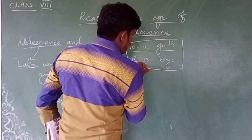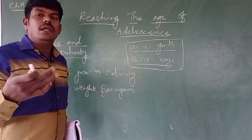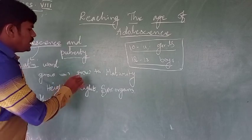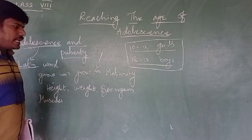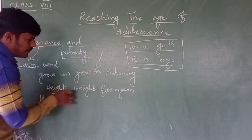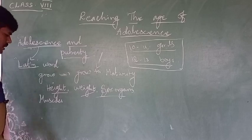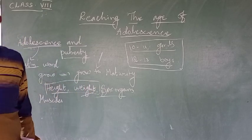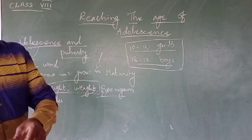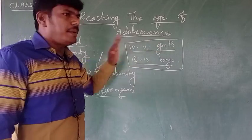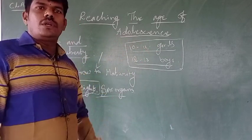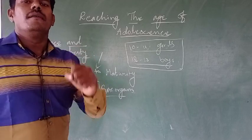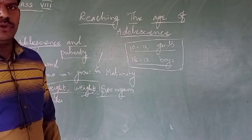Once puberty is reached, the person becomes eligible to produce new offspring. Before reaching maturity — increase in height, weight, and sexual organs — the person is not eligible to reproduce. Sexual maturity is when the person has the best possibility to produce new individuals.